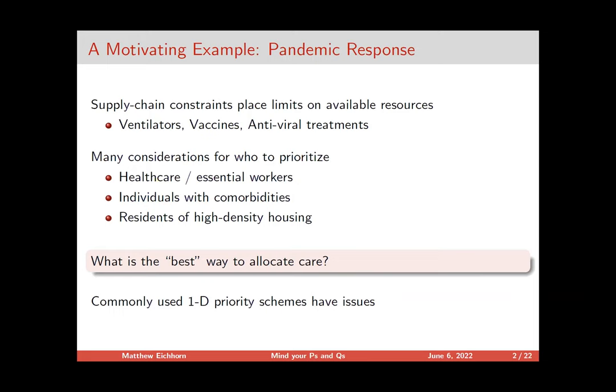These can have pretty big problems. If I have one criterion that supersedes all the others, it can become effectively impossible for people with certain traits to ever receive care — which is pretty alarming and something we definitely want to avoid. It should not be impossible for someone to get medical treatment.